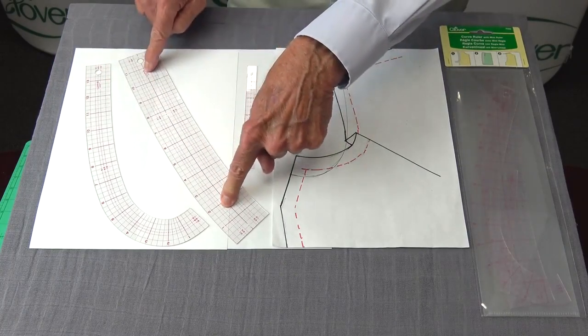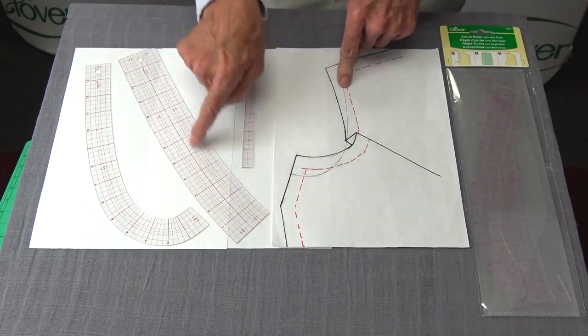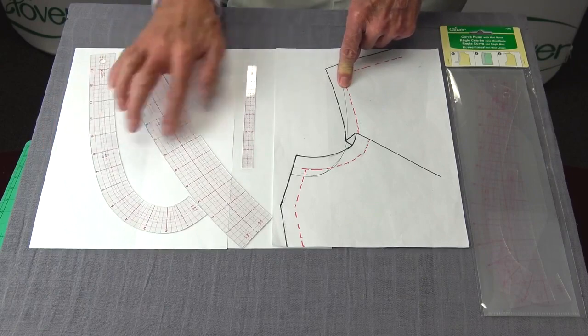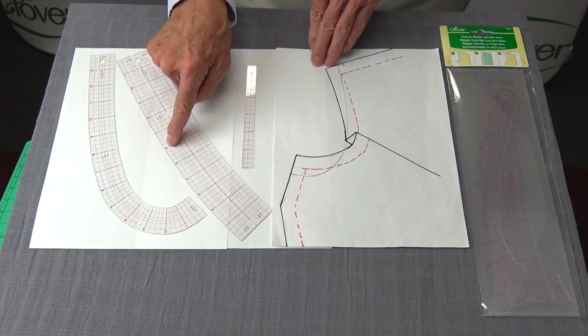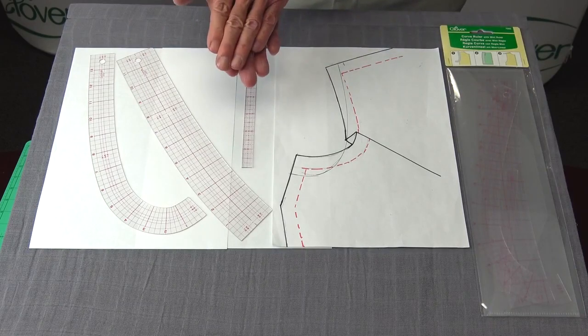Now, you'll notice we have the same thing for the hip curve, so if you're doing your hip line, you can actually adjust your hip line exactly the same way, or if you have front back seams that don't match, you can use this as well to make sure that your seams match up.